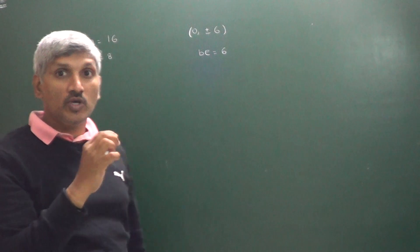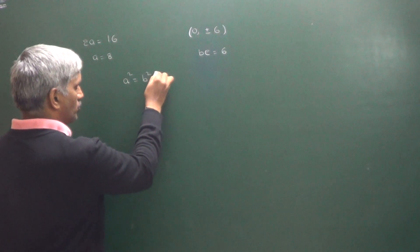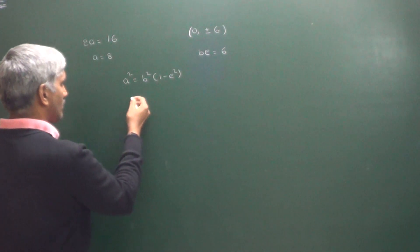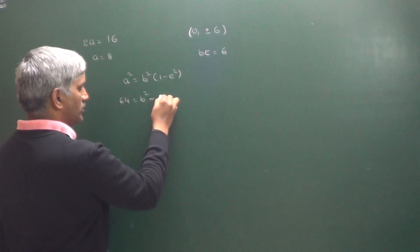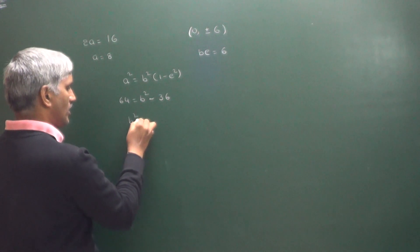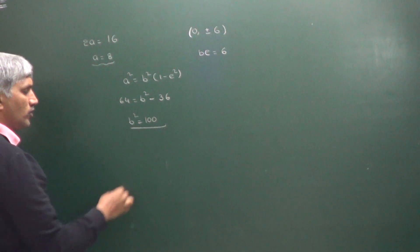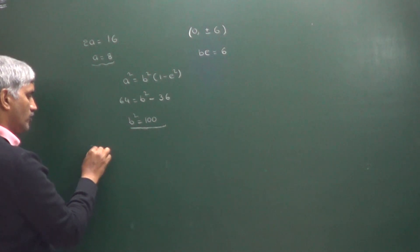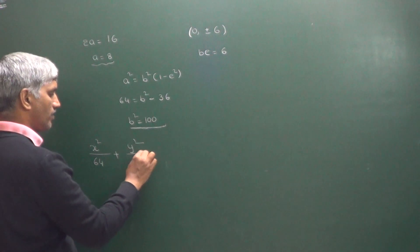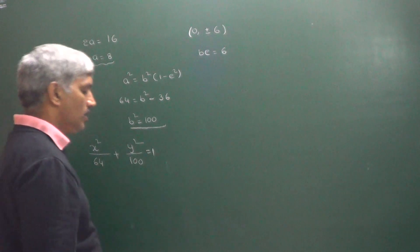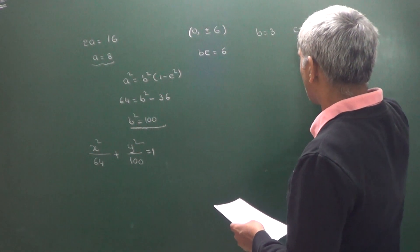In the second form of ellipse, the condition is A² = B²(1 − E²). From this: 64 = B² − B²E² = 36, giving B² = 100 and A² = 64. Therefore the equation of the ellipse is x²/64 + y²/100 = 1.